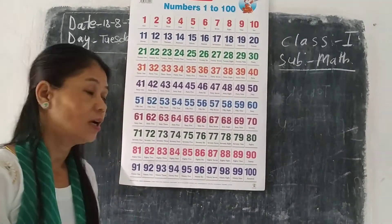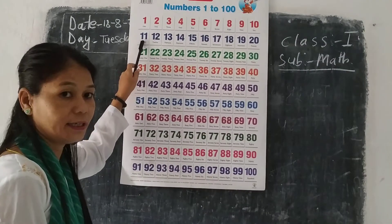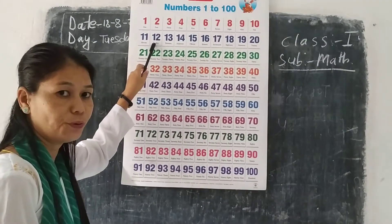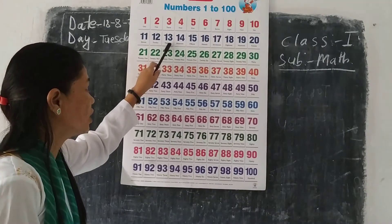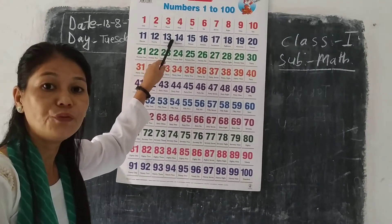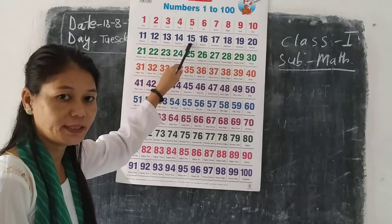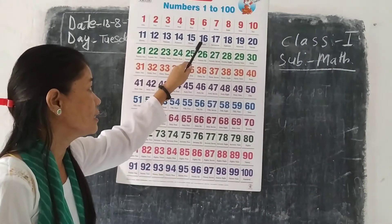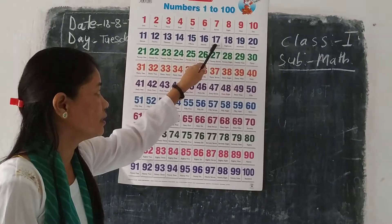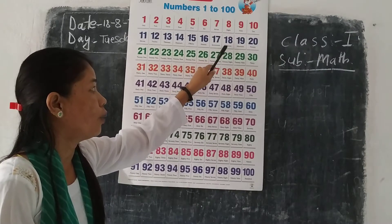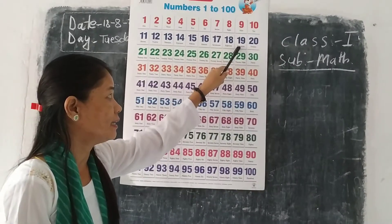And 1-1: 11. 1-2: 12. 1-3: 13. 1-4: 14. 1-5: 15. 1-6: 16. 1-7: 17. 1-8: 18. 1-9: 19.